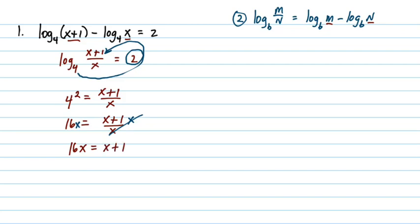So we'll end up with 16x is equal to x plus 1. And then we're going to want to get x on one side only. So I'm going to go ahead and subtract x on both sides. Let me change colors here. We'll subtract x on both sides. And we are going to end up with 15x is equal to 1. And so we'll divide both sides by 15. And we get 1/15th.